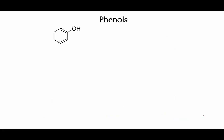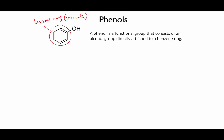Another kind of alcohol that it's worth being able to recognise is the phenol. A phenol consists of an alcohol group attached to a benzene ring. Although it's technically an alcohol, the proximity of the aromatic ring has an effect on the alcohol group, which means it doesn't behave in quite the same way as an ordinary alcohol. Exactly how and why that is can be left for another course, but when you're assigning functional groups, it is important to recognise that a phenol is not counted as an ordinary alcohol.